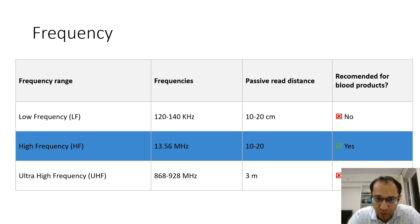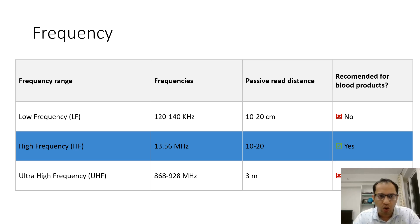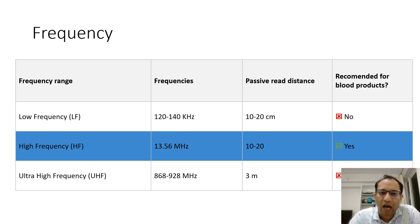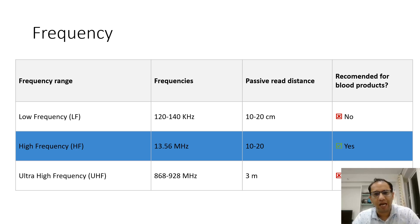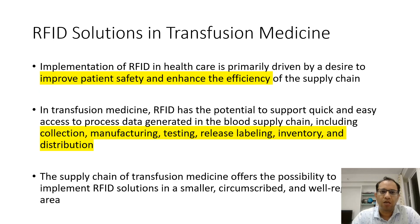So which frequency does RFID work on? There are three frequencies: low, high, and ultra high. High frequency — around 13.56 megahertz — is what is recommended for blood products.